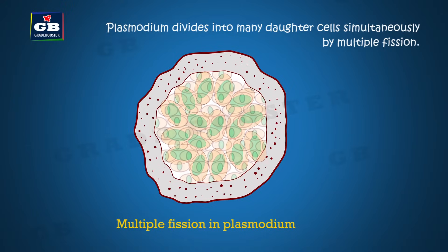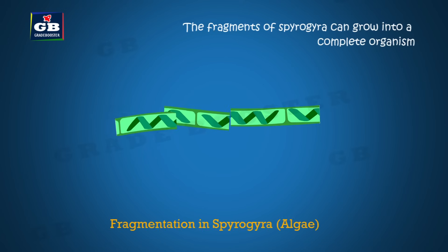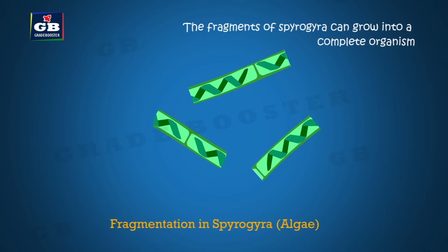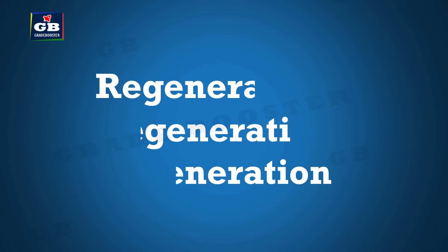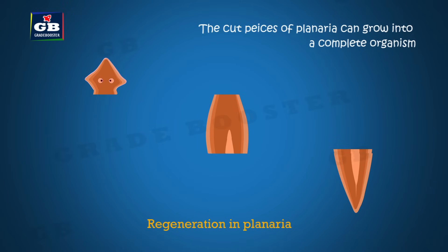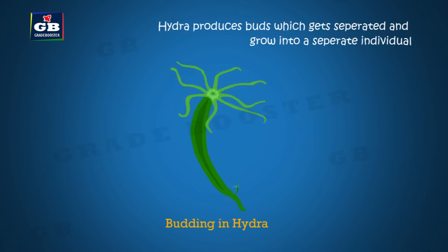Fragmentation: Spirogyra and algae break into fragments and each fragment grows into a new organism — this mode is called fragmentation. Regeneration: Planaria and Hydra — if these organisms are cut into pieces, each piece can grow into a complete individual. This is called regeneration.